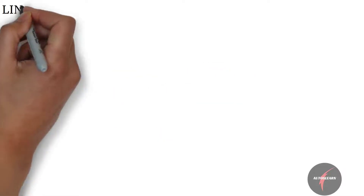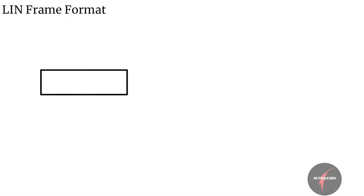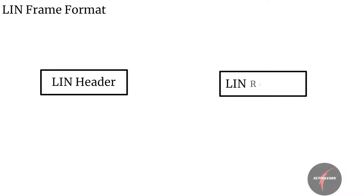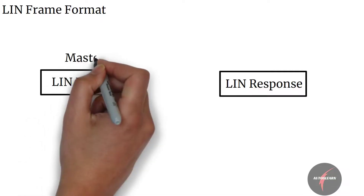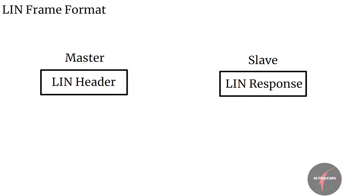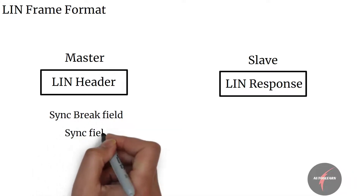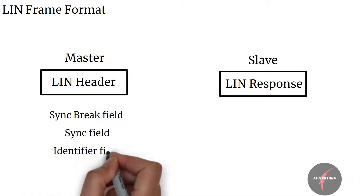Before we dive in, let's understand the LIN frame format. A LIN bus message frame consists of a header and a response. Typically, the LIN master sends a header on the LIN bus and the slave responds with up to 8 data bytes. The LIN header consists of a SYNC break field, a SYNC field, and an identifier followed by two parity bits.